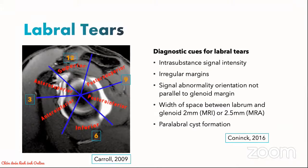Second, there are some diagnostic cues we should look out for when differentiating labral tears from labral variants — for example, when there is intrasubstance signal intensity within the labral material, when the labrum itself has irregular margins, when the signal abnormality within the labrum is not orientated parallel to the bony glenoid margin, when the cleft is more than 2 mm or more than 2.5 mm, or there are associated paralabral cysts. These clues actually point us towards labral tear rather than variance.